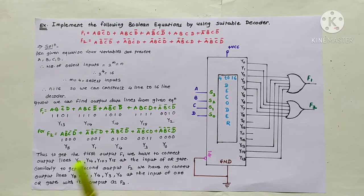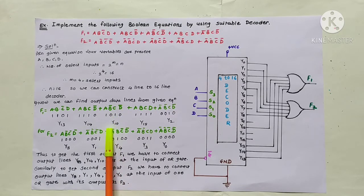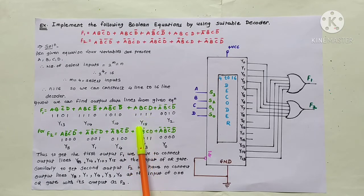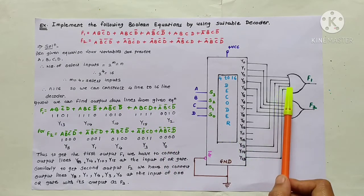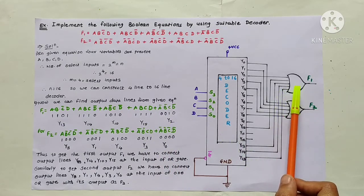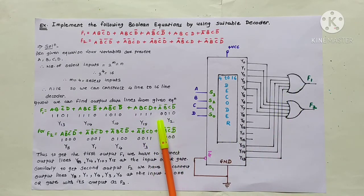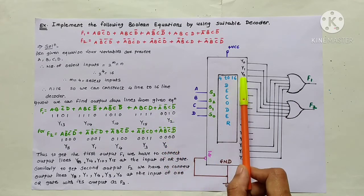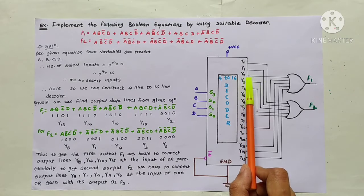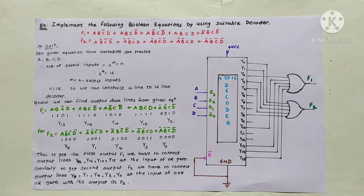So 1,0,1,0 is equivalent to decimal 10, therefore Y10. 1,1,1,1 is Y15 — the last input given to the first OR gate. And 0,0,1,0 represents decimal 2, so Y2 is also given to the first OR gate to obtain F1.